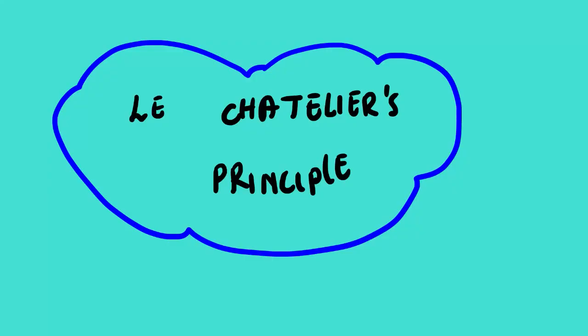Today's lesson we are going to look at chemistry. The topic for today is Le Chatelier's principle. This principle is under Kc, which is chemical equilibrium. There is a lesson video where we look at chemical equilibrium in detail, and there is another lesson video where we look at factors affecting chemical equilibrium.